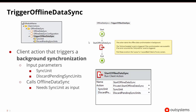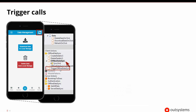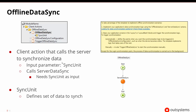If in our click action we ask it to start the synchronization by calling the trigger, the trigger is going to start the offline data synchronization. Then trigger offline data sync is really going to call the offline data sync client action, which is part of the framework available to us. In the offline data sync that gets called and activated, it will start and then call the server data sync server action.